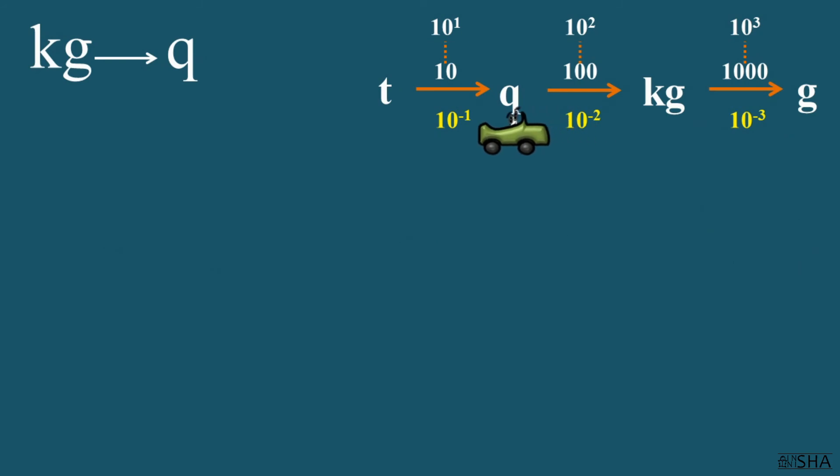8300 kilograms are to be converted to metric centenars. We simply rewrite 8300 and multiply it by 10 to the negative second power. We've already got centenars. Since in this case we are going against the arrows, it is important to change the sign of the exponent to the opposite. The answer can be written as 83 centenars.